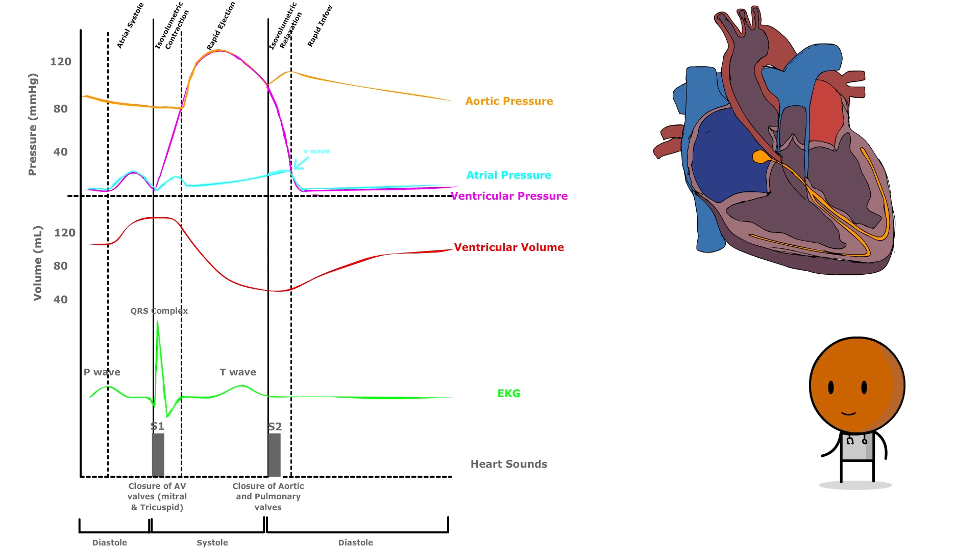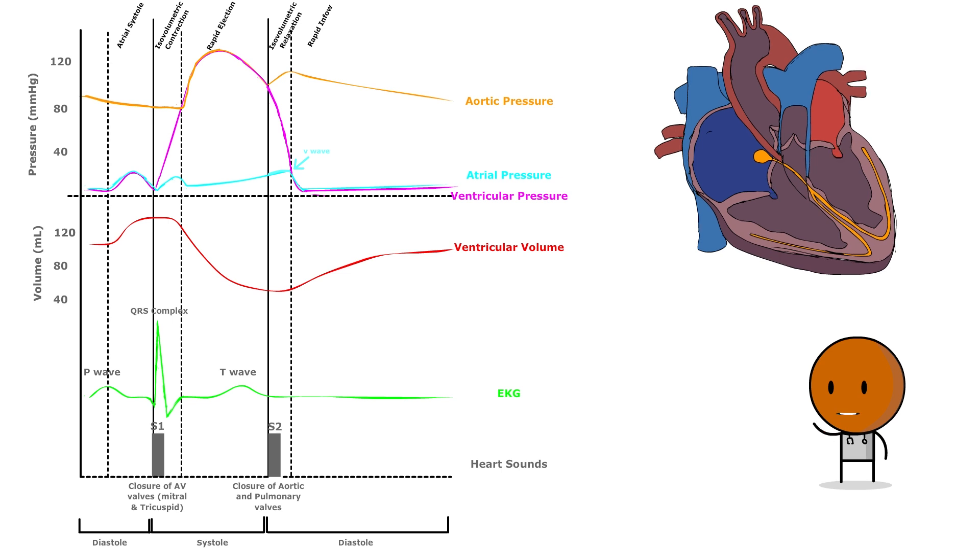And finally, phase six, ventricular diastole, or the early filling. When the ventricular pressure drops below the atrial pressure, the AV valves open, causing the atrial pressure to decrease as blood moves into the ventricles. This is seen as the Y descent in the atrial pressure curve.